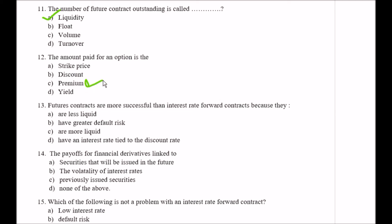Question number thirteen: Futures contracts are more successful than interest rate forward contracts because they Option A are less liquid, Option B have greater default risk, Option C are more liquid, Option D have an interest rate tied to the discount rate. So here your right option is Option C, that is are more liquid.